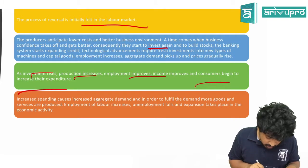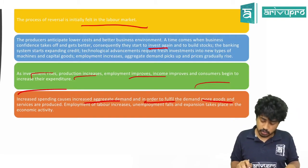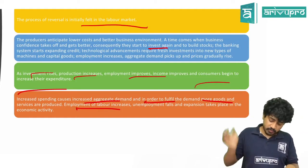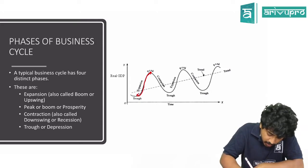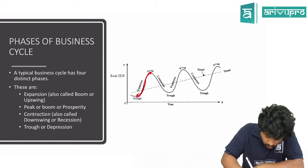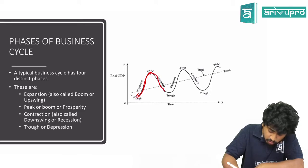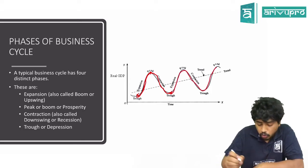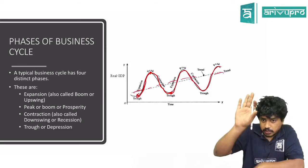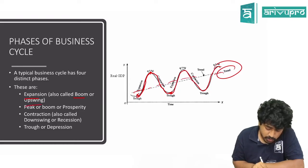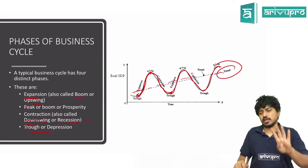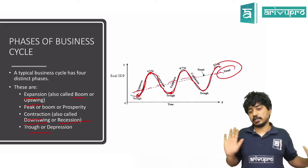Investment rises, production increases, employment improves, and consumer expenditure increases. Increased spending causes increased aggregate demand. To fulfill demand, more goods are produced, employment rises, unemployment falls — expansion takes place again. So the cycle is: expansion → peak → contraction or recession → sometimes depression → trough → expansion again. Expansion is also called boom or upswing; contraction is called downswing or recession. These are the four stages of the business cycle.